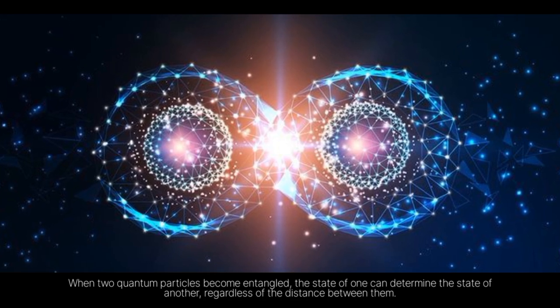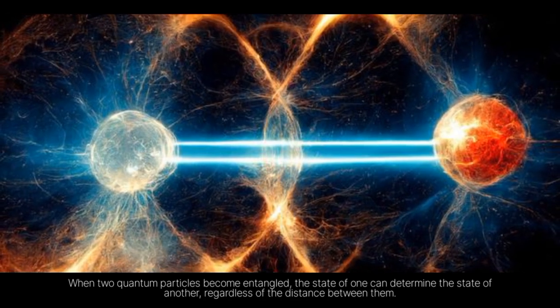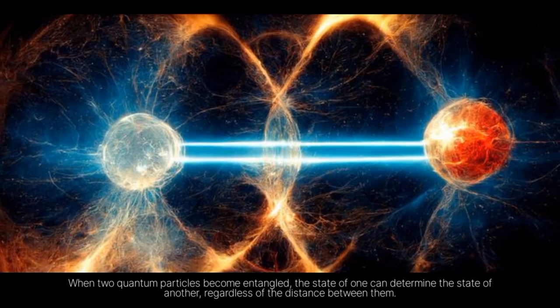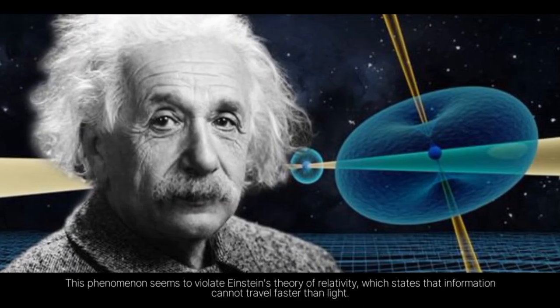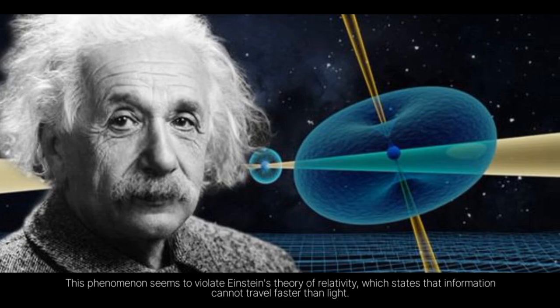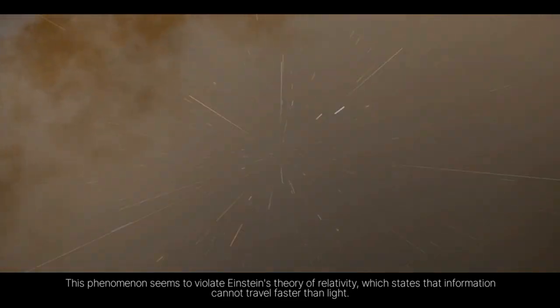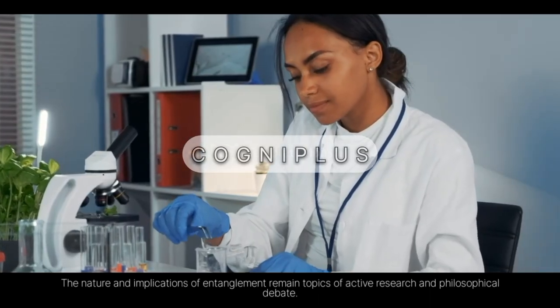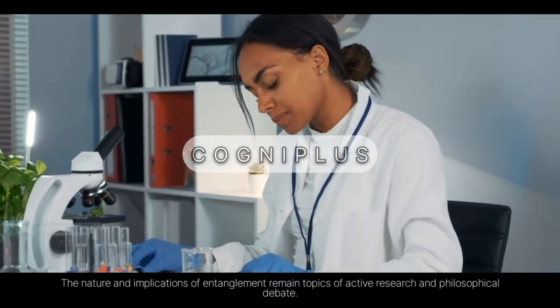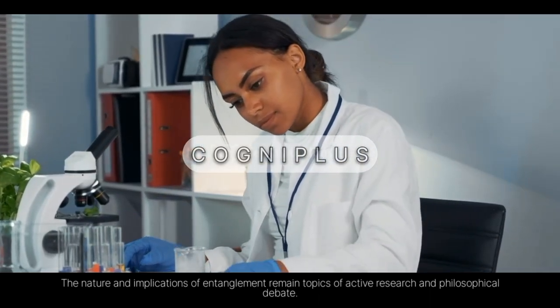Quantum Entanglement. When two quantum particles become entangled, the state of one can determine the state of another, regardless of the distance between them. This phenomenon seems to violate Einstein's theory of relativity, which states that information cannot travel faster than light. The nature and implications of entanglement remain topics of active research and philosophical debate.